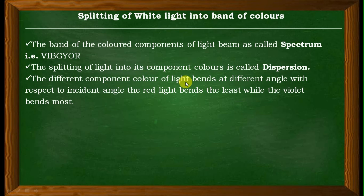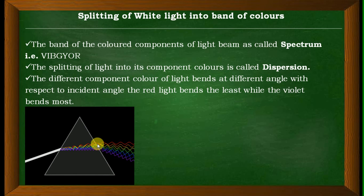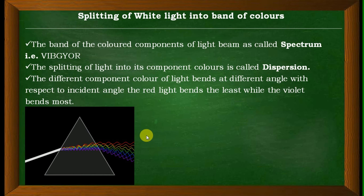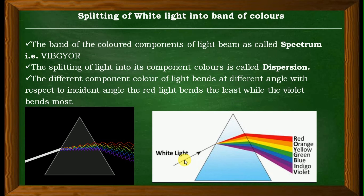The different component colors of light bend at different angles with respect to the incident ray. Red light bends the least while violet bends the most. Light also travels in the form of waves. This diagram shows white light passing through a prism as waves, illustrating the least and maximum deviation for different colors.